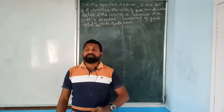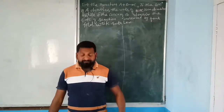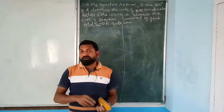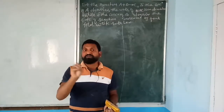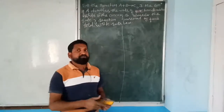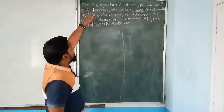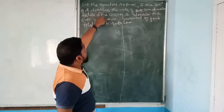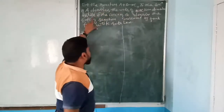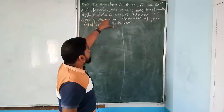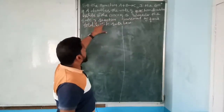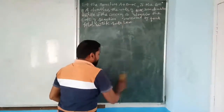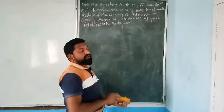In the previous video we saw rate law and how to write it. Here we will see the numerical application of that rate law. Problem: For the reaction A + B → C, if the concentration of A doubles, the rate of reaction doubles; while if the concentration of B doubles, the rate of reaction increases by 4-fold. Write the rate law.